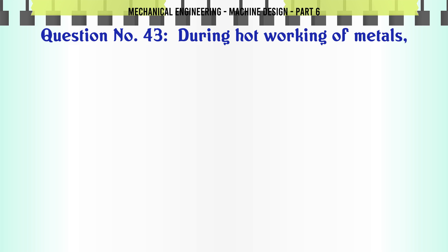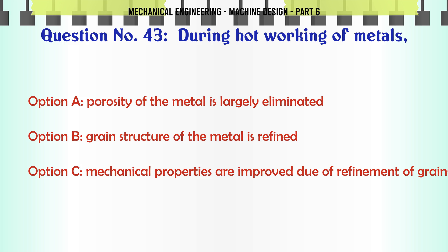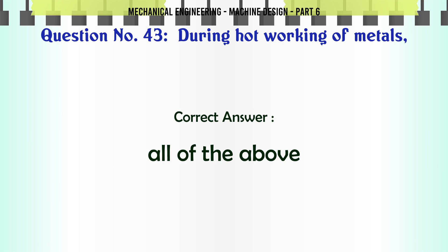During hot working of metals: A) porosity of the metal is largely eliminated, B) grain structure of the metal is refined, C) mechanical properties are improved due to refinement of grains, D) all of the above. The correct answer is all of the above.